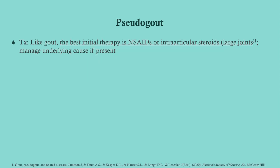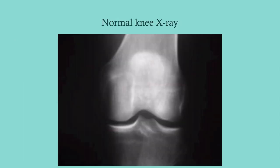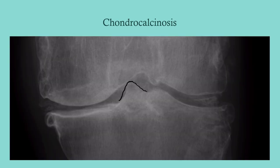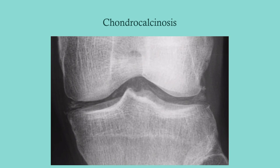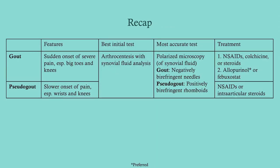Like gout, best initial therapy for pseudo gout is NSAIDs, or you can do intra-articular steroids — for example, injecting a large joint like the knee. On x-ray, a normal knee shows a consistent, confluent joint space. In pseudo gout you'll see chondrocalcinosis — little spurs that encroach into the joint space. You can see the chondrocalcification here in the joint space. And that's a recap of everything we talked about.